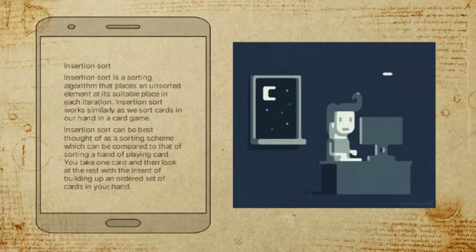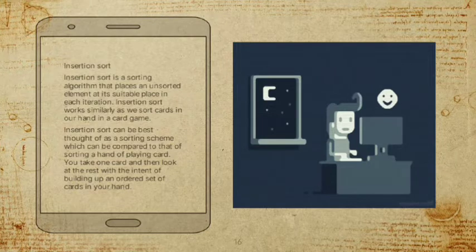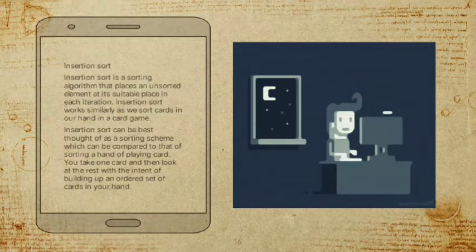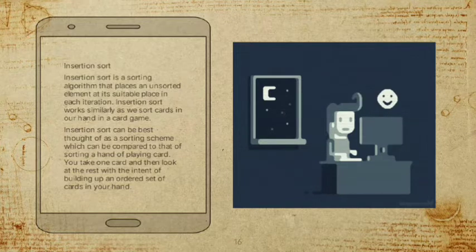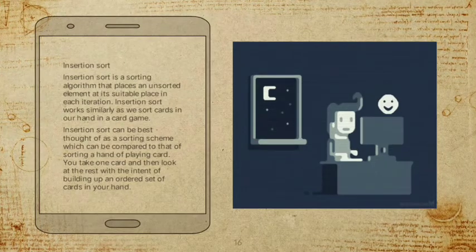Insertion sort works similarly to how we sort cards in our hand in a card game. It can be best thought of as a sorting scheme comparable to sorting a hand of playing cards — you take one card and then look at the rest with the intent of building up an ordered set of cards in your hand.